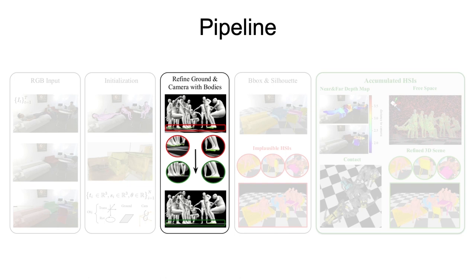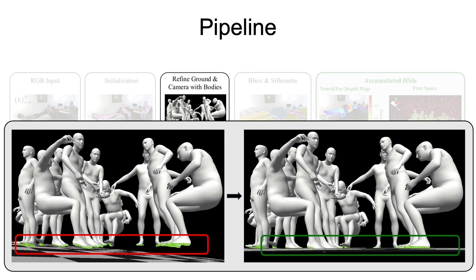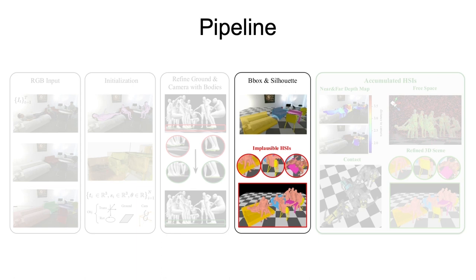The explicit foot contact points are used as constraints to refine the camera orientation and ground plane prediction. Then we optimize the object's layout by 2D bounding boxes and silhouette constraints to better align with the input image.